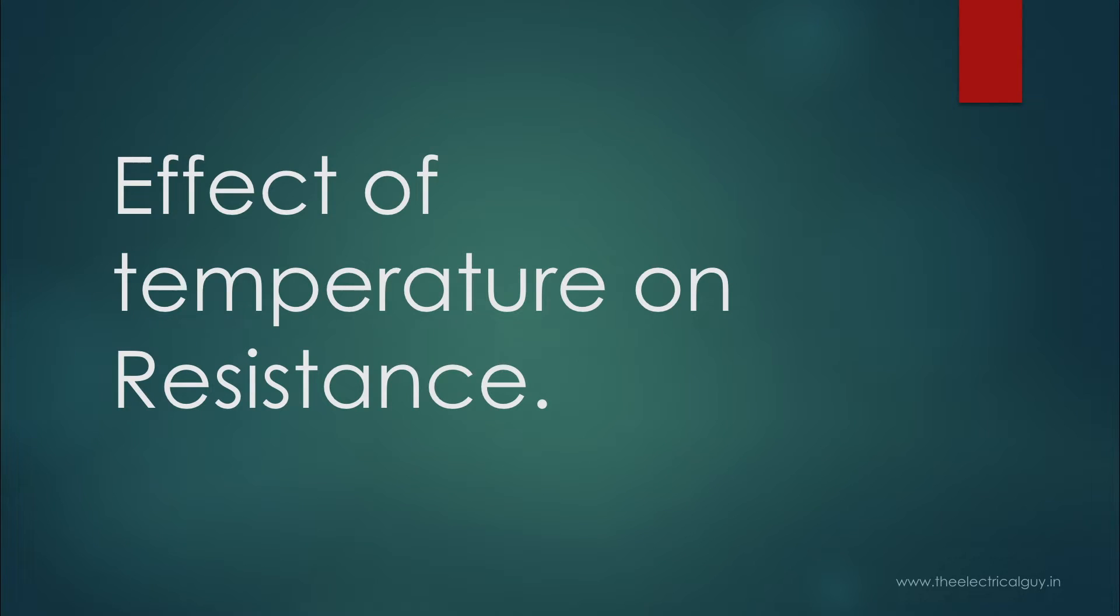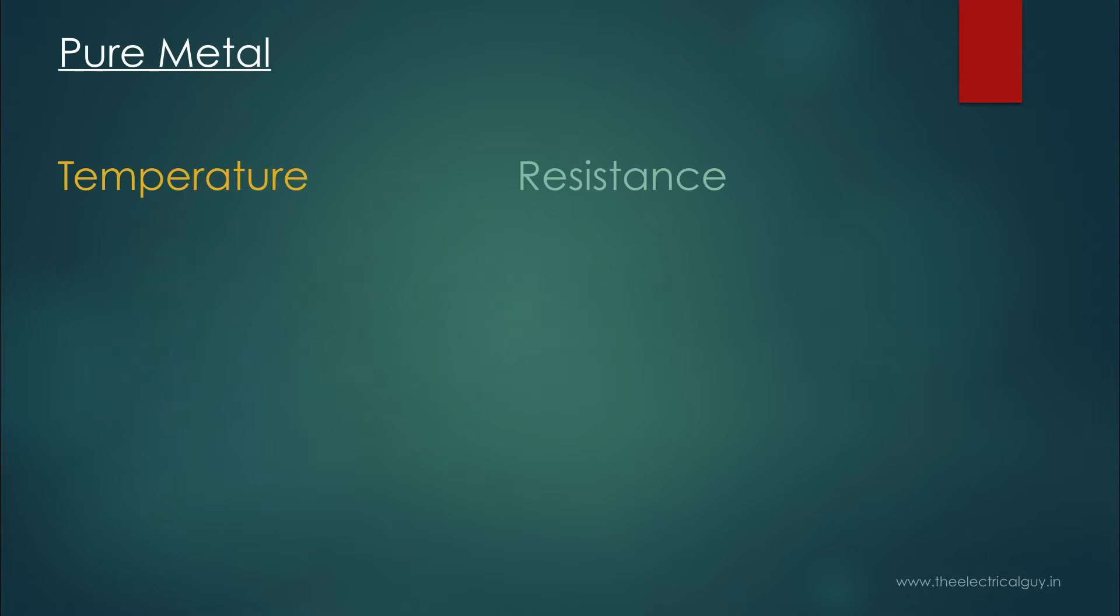Now let's understand the effects of temperature on resistance. Resistance of pure metal, for example copper, increases with the increase in temperature. If at 20 degrees Celsius the resistance of a copper wire of a certain length is 2 ohms, and maybe if after some time the temperature increases to 40 degrees Celsius, resistance may also increase to 4 ohms. This is just an example I am giving.